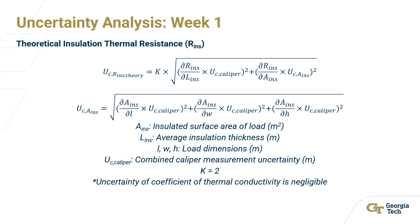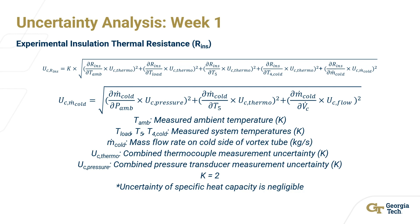These are the equations for the experimental insulation thermal resistance, which is a much more complicated equation. It involves values collected from the thermocouples, the pressure transducer, and the flow meters, and as such there are many more different components. It is noticeable that because of the flow meter component, the uncertainty changes noticeably at different voltages. As seen previously, the highest voltage had the highest uncertainty.